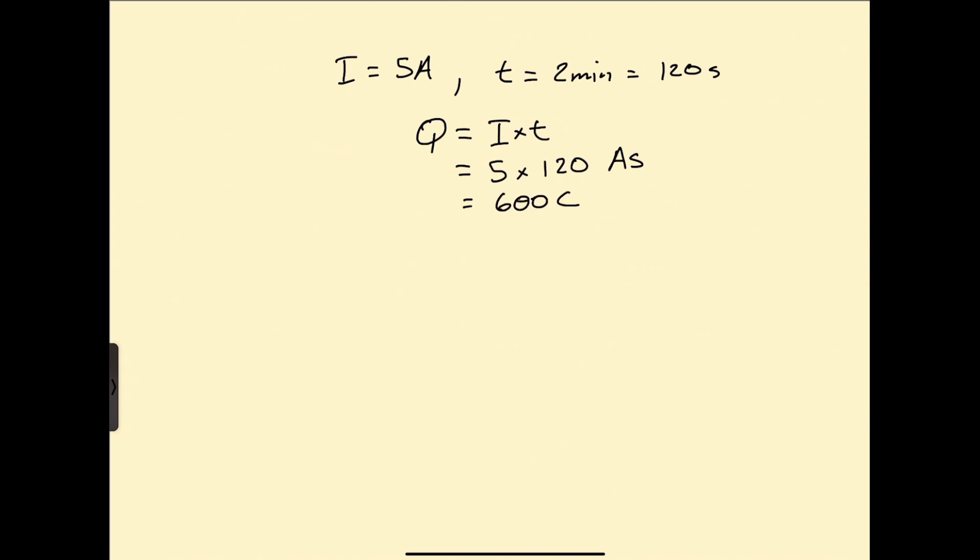So again, the Coulomb is defined as the quantity of electricity that flows past a given point in an electric circuit when a current of 1 ampere is maintained for 1 second.